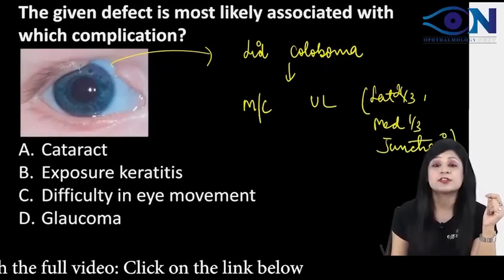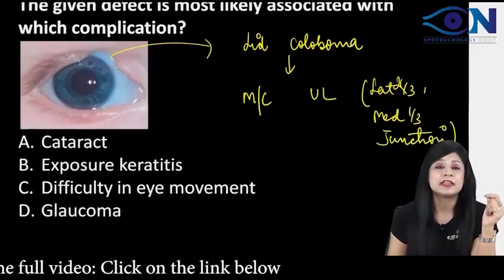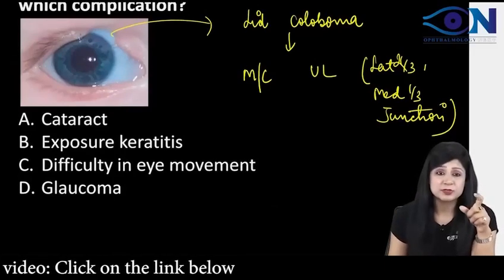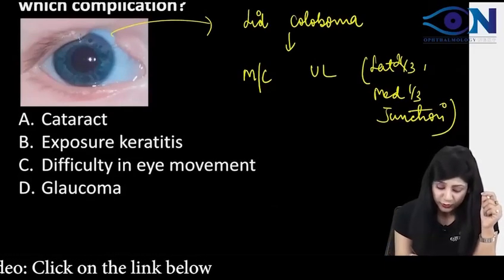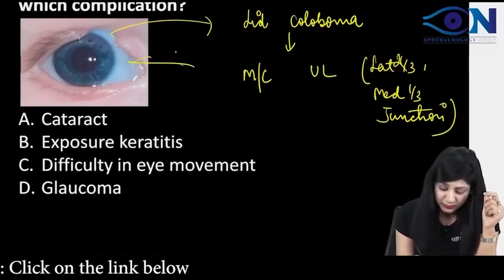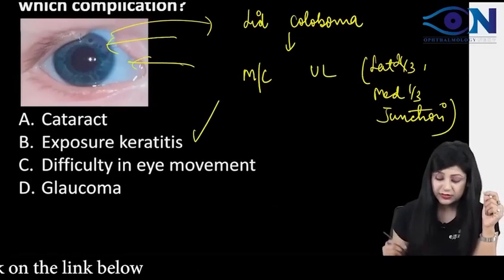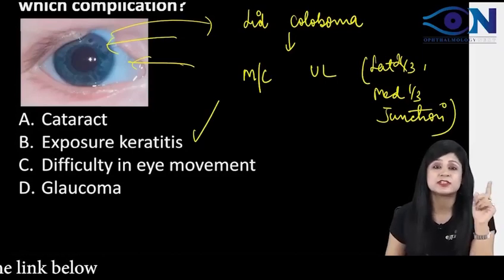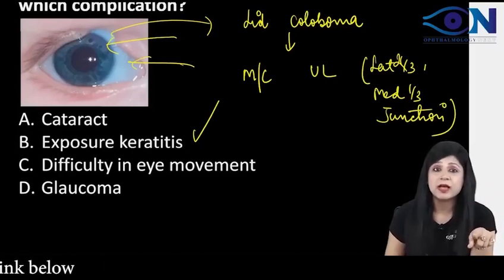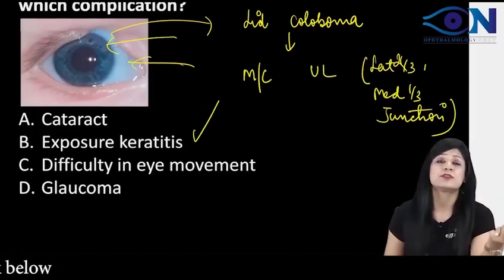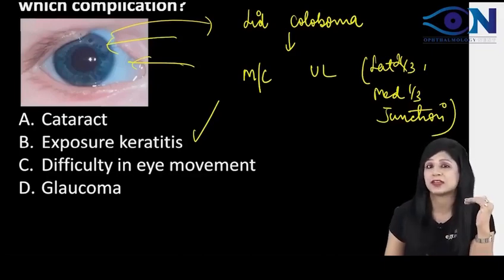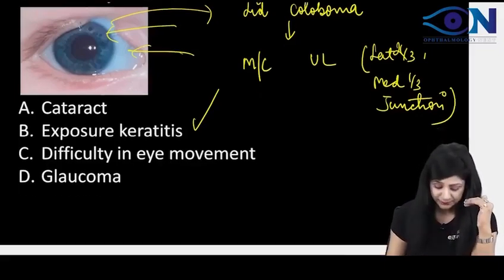Because we are having the lid coloboma, there is absence of tissue, so more of the radiations will be going from here. Therefore, it can cause exposure keratitis. So, with a lid coloboma, the greater the defect, the more the chances for exposure keratitis.